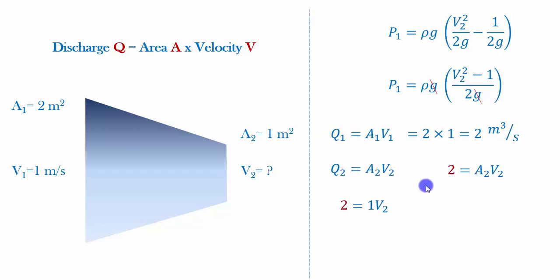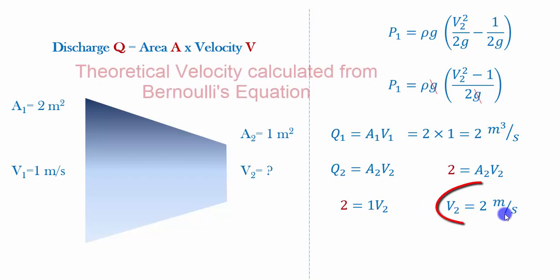q2 is equal to A2 v2. Since we know the area at the outlet is 1 meter squared, we can replace this A2 by 1. That will become 1. So the velocity at the outlet will be 2 meter per second.